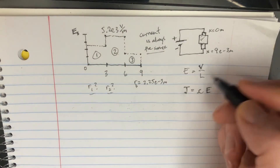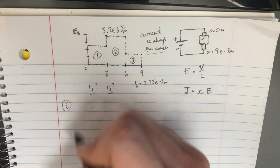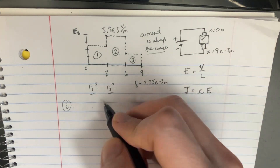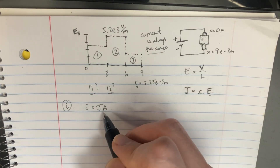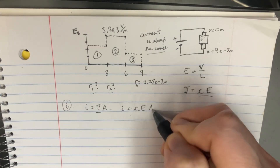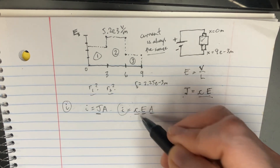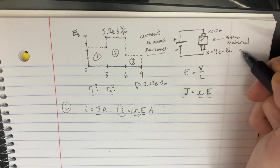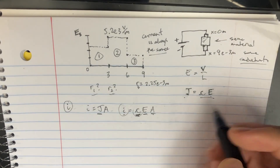Since the current is always the same, we should use equations involving I because they'll all be the same value. We also know that I equals J times A. We can substitute J equals conductivity times E to get I equals σEA. The conductivity is also going to be the same throughout, because it's the same material — conductivity is an intrinsic property of the material.